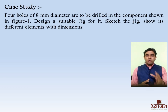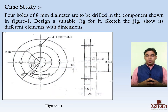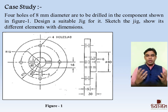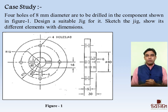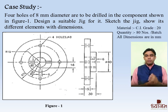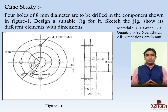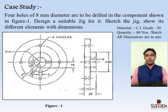Let's start with the first case study. The given data is: 4 holes of 8 mm diameter are to be drilled in the component shown in figure. Design a suitable Jig for it, sketch the Jig, and show its different elements with dimensions. The additional data is: material is CI grade 20 and the quantity is 80 numbers per batch. We will evaluate the size and shape of the component and then determine which kind of Jig we are going to design.